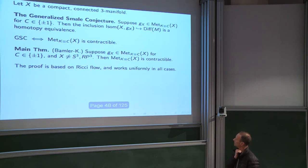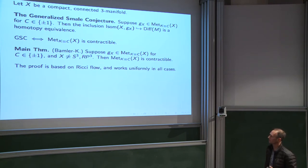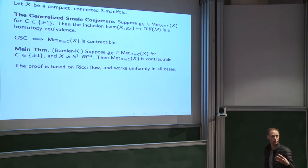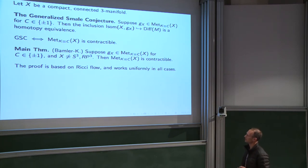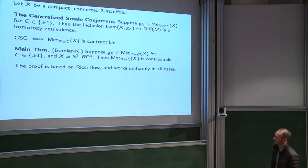The idea, based on what I've said so far, is to somehow use Ricci flow. One nice feature is that we end up with a proof which works uniformly whether we're dealing with positive curvature or negative curvature. The argument I'll discuss today excludes the cases X = S³ and X = RP³ — I'll explain why shortly. There's another argument also based on Ricci flow, more involved, which includes those cases. We're in the process of writing that up now.